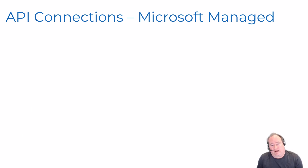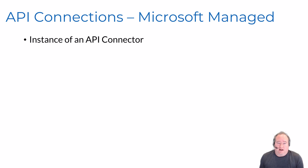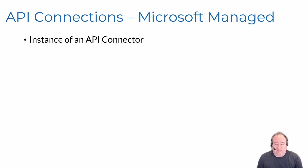Let's talk about API connections - specifically Microsoft managed API connections. An API connection can be thought of as an instance of a connector. So you have a SQL connector, for example, and when you go to implement it you create an API connection of that connector type. Inside there you'll have your triggers and actions all related to SQL that you can use.